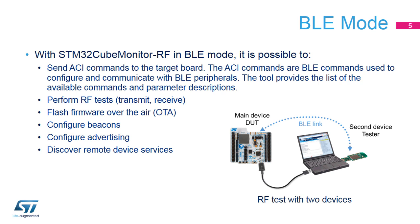When BLE mode is selected, users can perform various tests. It is possible to send ACI commands — standardized commands used to communicate with the BLE stack. The tool displays the list of commands supported by the STM32WB device, and for each command, a list of its parameters and their description. Another important feature is RF communications testing; the tool can send or receive tones or packets. It is also possible to use two devices to evaluate the quality of the BLE communication link.